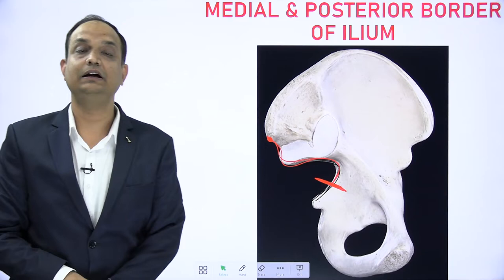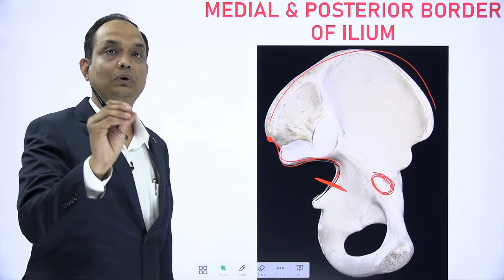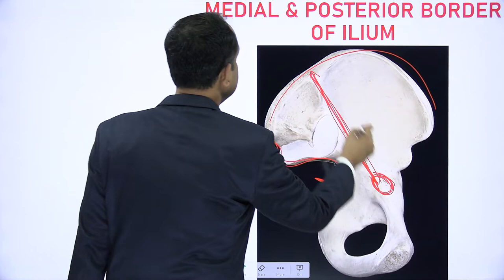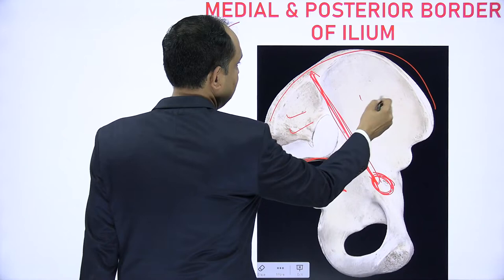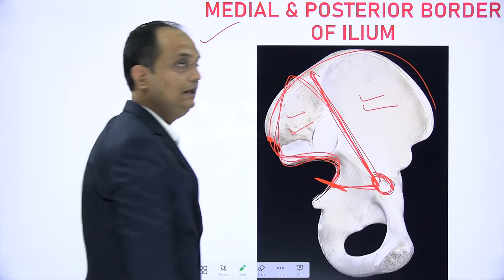On this inner side of your hip bone, you can see that this is the iliac crest and this is your ilio-pubic eminence — a nodular eminence on the inner side. From this you have a border. This prominent border on the medial surface is known as the medial border of the ilium. The surface above it is known as iliac fossa and the surface below it is known as the sacro-pelvic surface of your ilium.